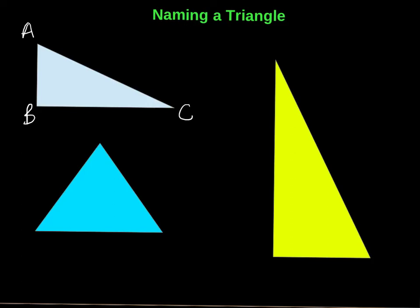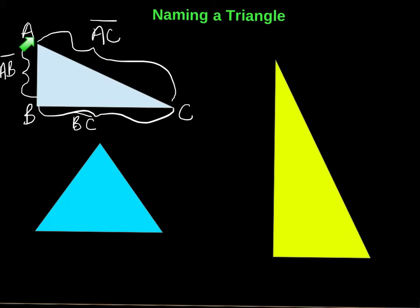So back in the day, what you would do is you would label this side here BC, right? And this side right here, you would label it line segment AB. And this side right here, you would label it line segment AC. And you would indicate that with a little line over top each of those, right? So that you know you're talking about a line segment. What we're going to do now is I'm going to show you how we label it using the opposite angle.